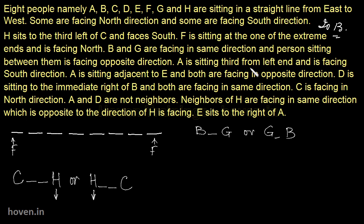A is sitting third from the left end and is facing south direction. Now this is very concrete: third from left end and facing south. So counting 1, 2, 3 — A is at position 3. Let us mark a downward arrow for A because this is what we know concretely. Whatever is known and confirmed will be written at the top of the arrangement.